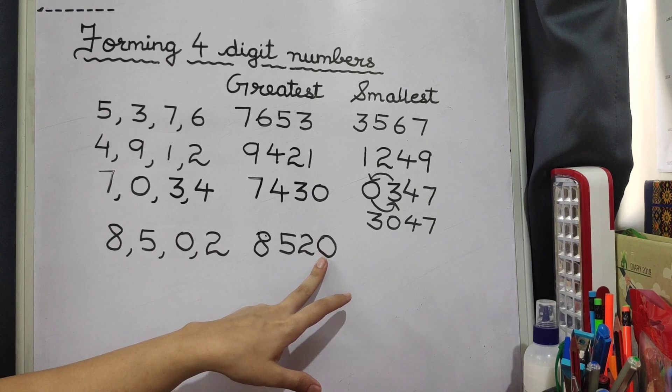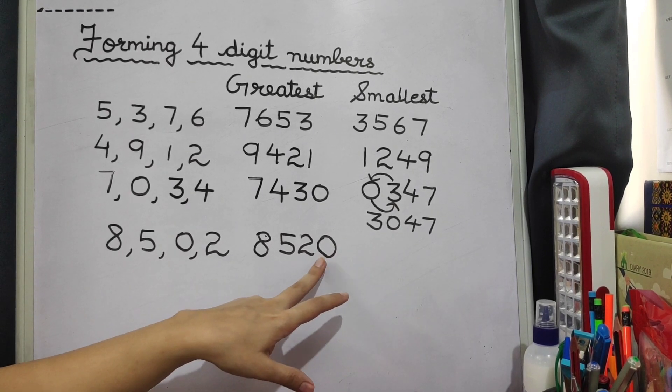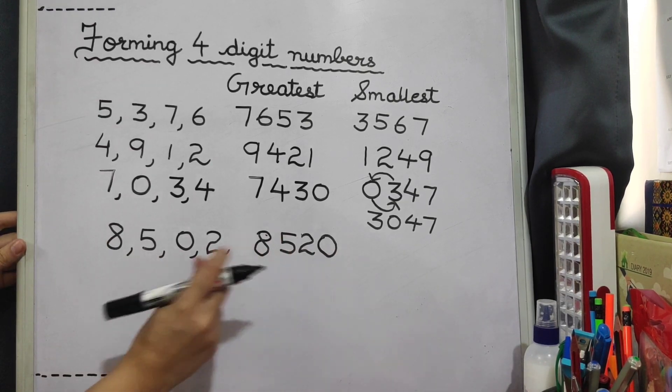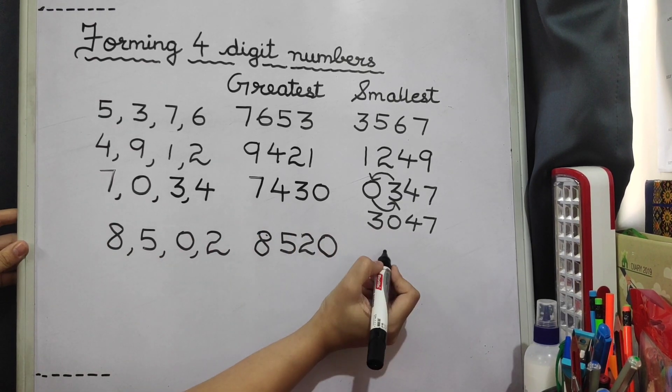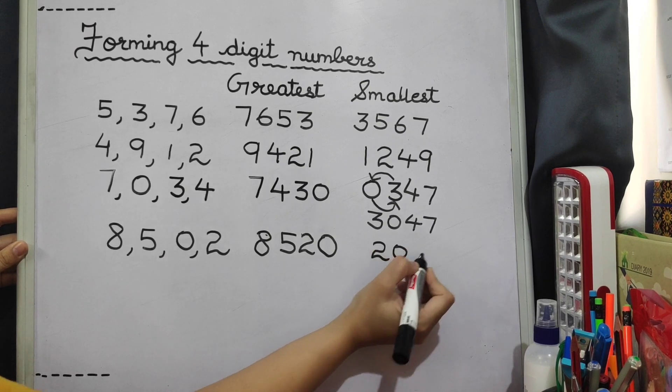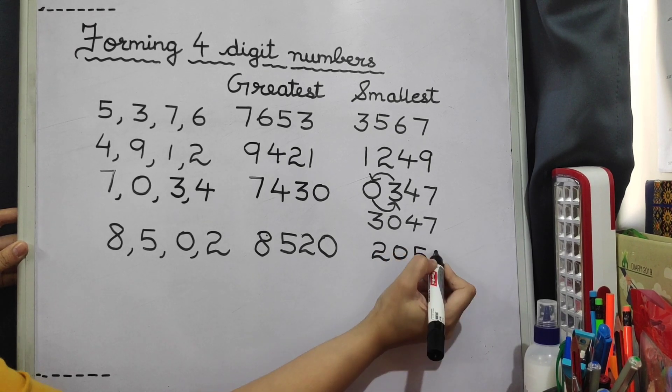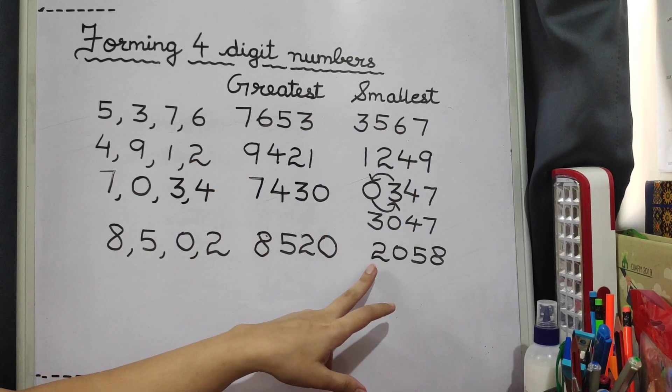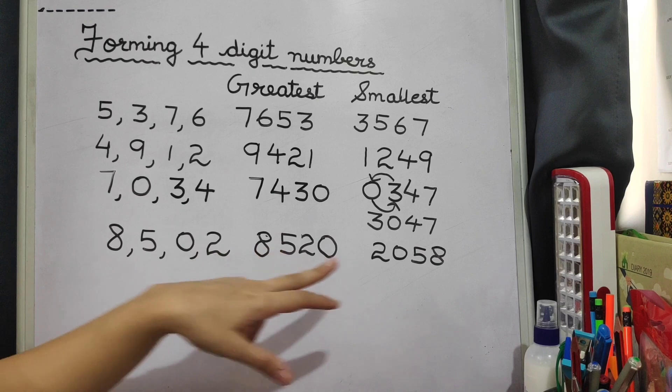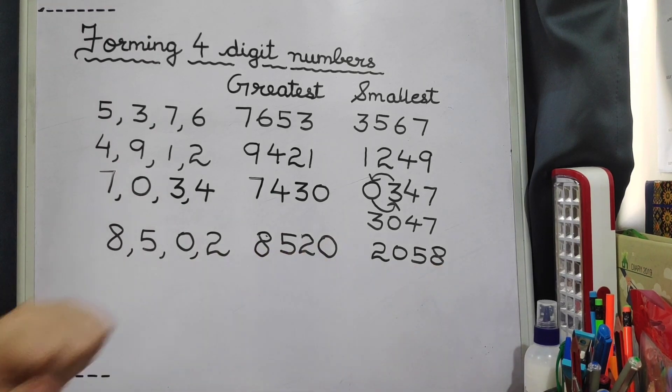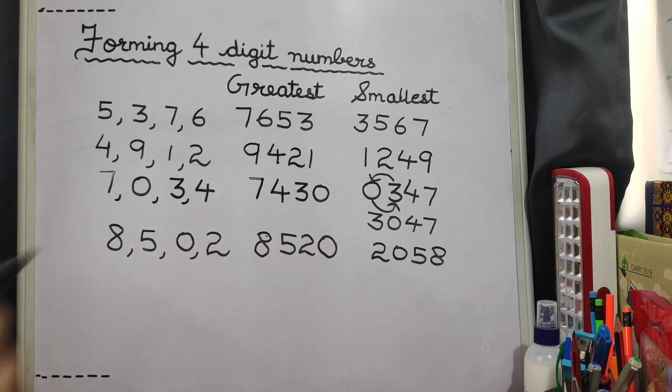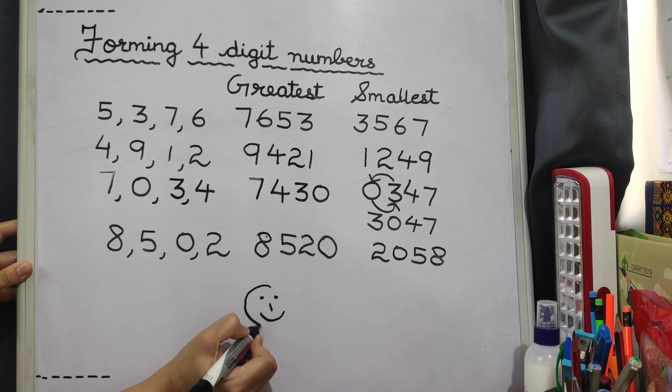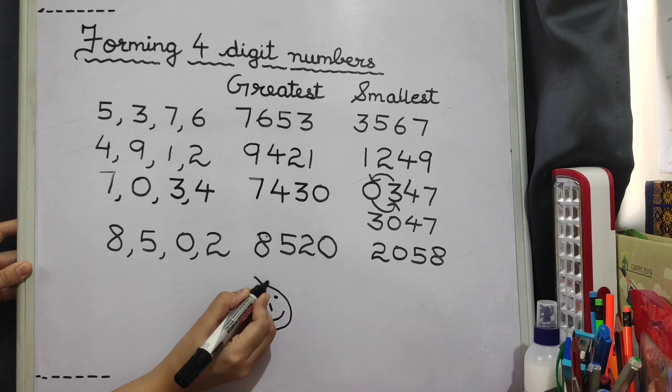Now what about the smallest digit? 0 will be shifted to the 100's place. So 2 will come first. Then 0, then 5 and then 8. So the smallest number using these digits will be 2058. I hope you understood children. Thank you so much.